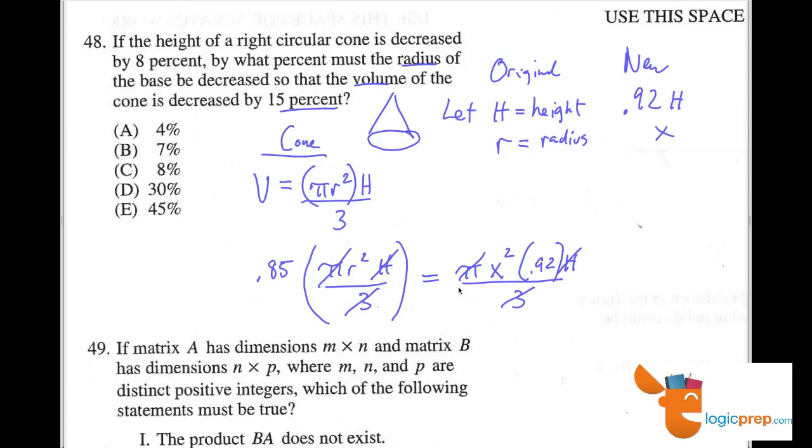Now I have 0.85 r squared equals x squared times 0.92. Now, we want to know what percent must the radius of the base be decreased. Well, let's find out what percent the radius, the new radius x is, of the original. If we can find out what percent this is of the original radius, then we know how much it decreased by.